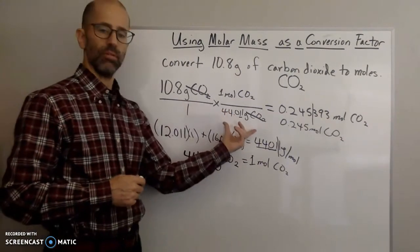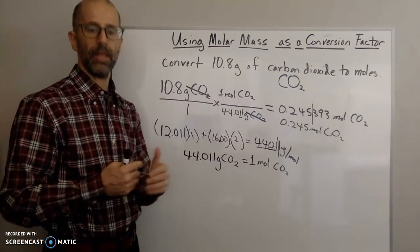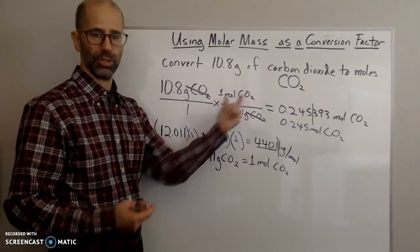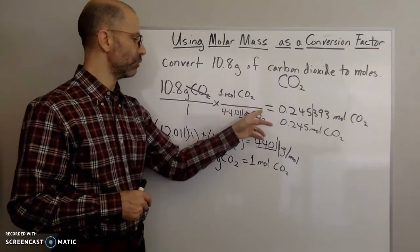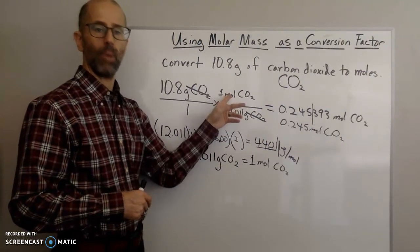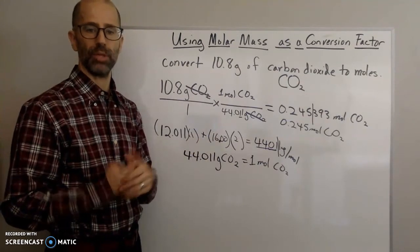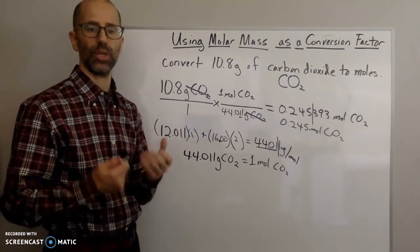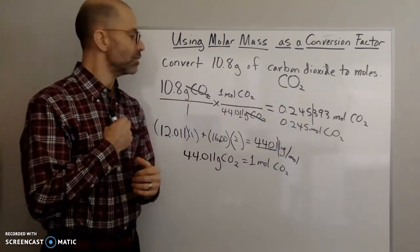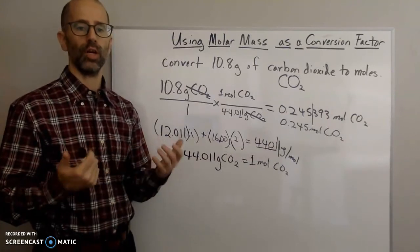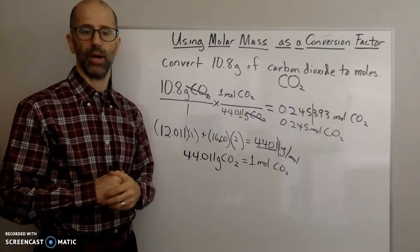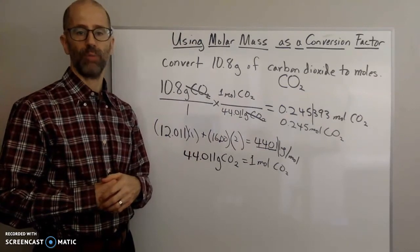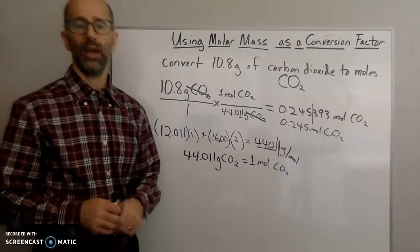The next step would be using Avogadro's number. If you want to convert moles to particles — for example, how many molecules of carbon dioxide you have — you need another conversion. We know that one mole equals Avogadro's number, which is 6.022 × 10²³. In the next video I'll go over a couple of examples where we do that two-step problem and continue to use molar mass to solve problems.